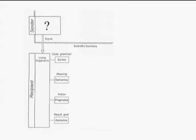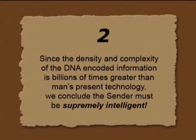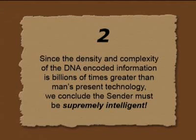What can we say about the sender from the viewpoint of laws of nature about information? The first conclusion we have found is there must be a sender. But we can say more about the sender. Since the density and complexity of the DNA encoded information is billions of times greater than man's present technology, we conclude the sender must be supremely intelligent.